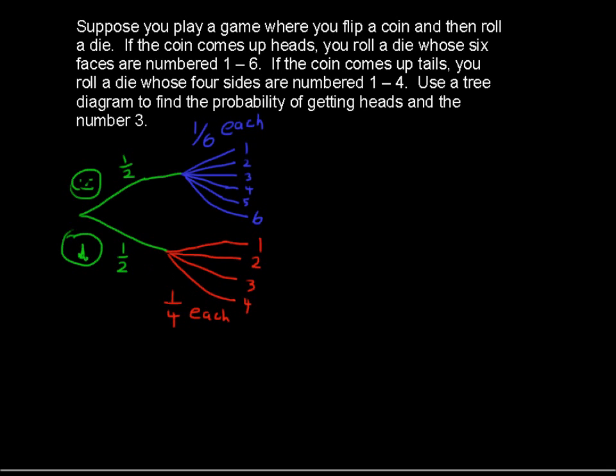Let's look at what's being asked in this question. This is the probability of getting heads and the number 3. And to do that, we're going to multiply the probability of heads times the probability of getting a 3